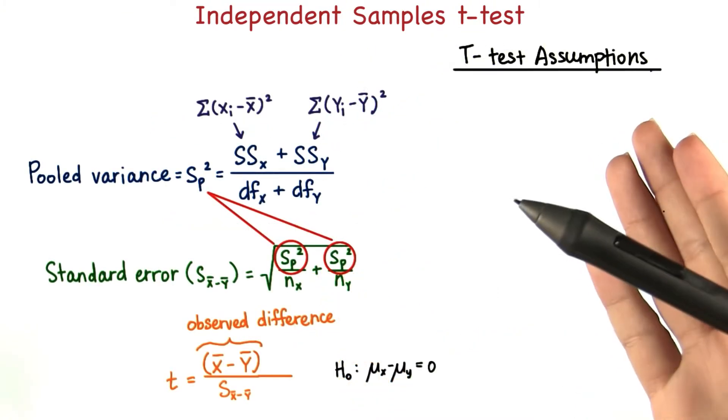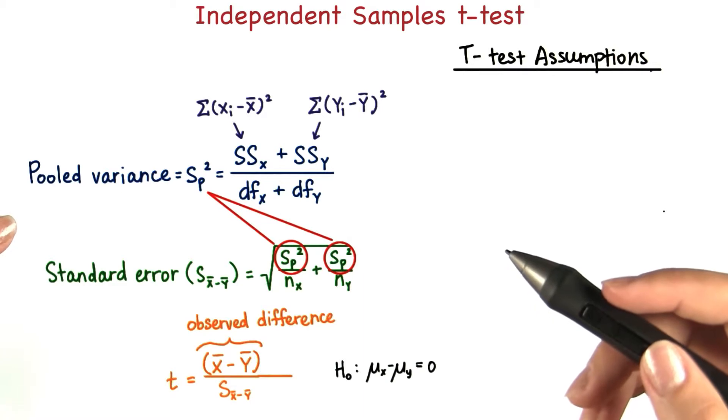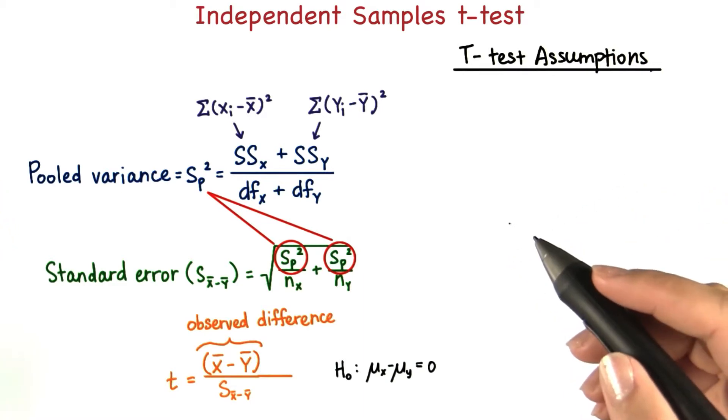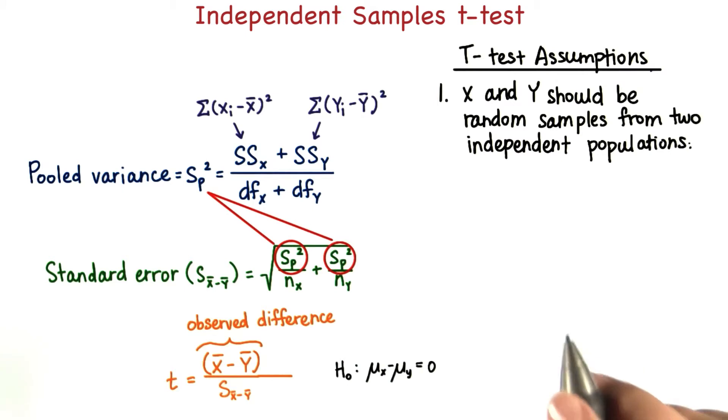There are a few assumptions to keep in mind when using the pooled variance, as there are with any method of measurement. First of all, x and y should be random samples from two independent populations.